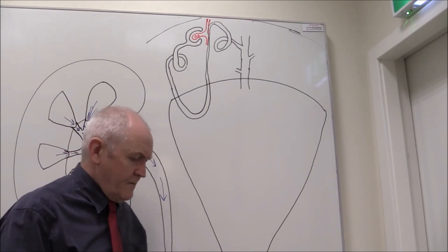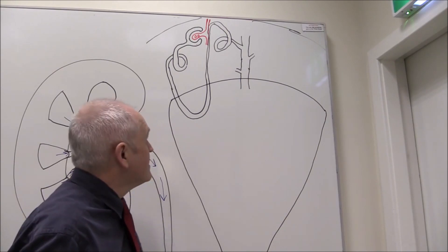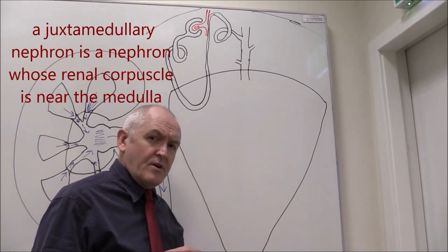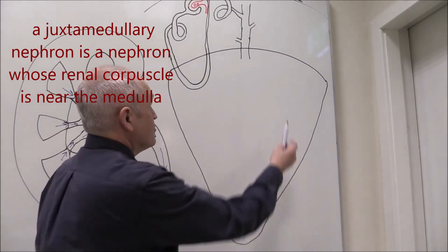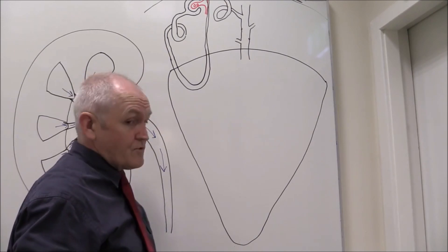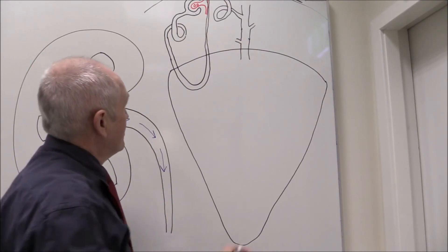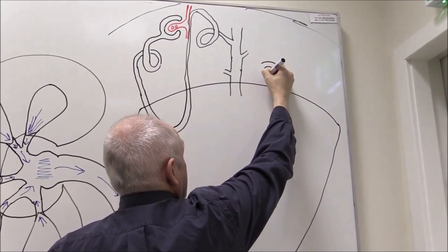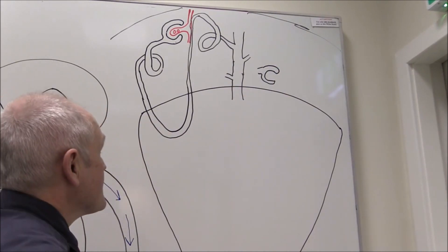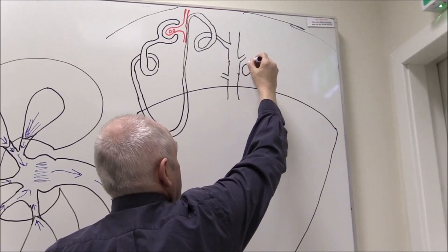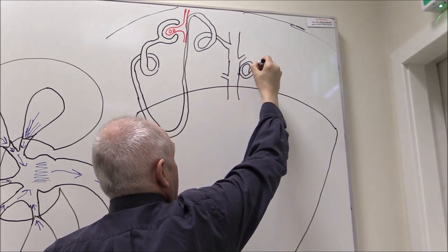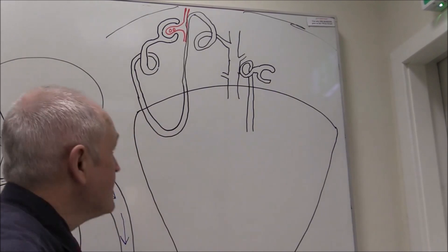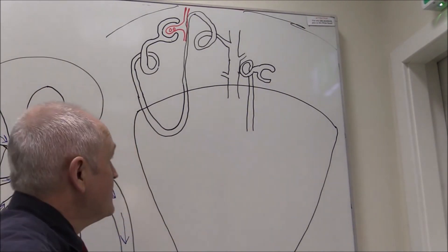Now the next sort of nephron are called juxtamedullary nephrons. Juxta means close, so juxtamedullary nephrons have their renal corpuscles close to the medulla. So let's now draw a juxtamedullary nephron. The renal corpuscle in this case is going to be close to the medulla, and there's going to be a first convoluted tubule. Then this nephron is going to enter down into the loop of Henle — the tubule is going to pass down into the cortex.